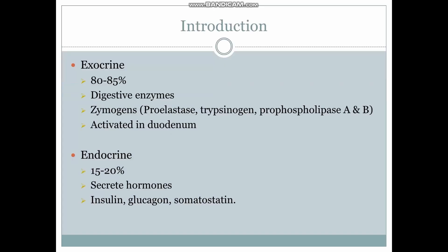Today we will talk about pancreas pathology. The pancreas functions as both an exocrine and an endocrine organ. The exocrine portion is the larger portion, composed of 80 to 85 percent of the pancreas, and is made of specialized epithelial cells called acinar cells. These acinar cells secrete digestive enzymes which are packaged into granules in an inactivated form called zymogens.